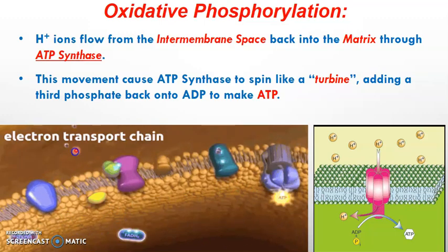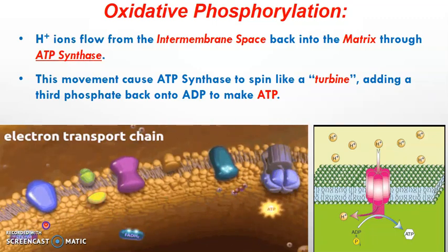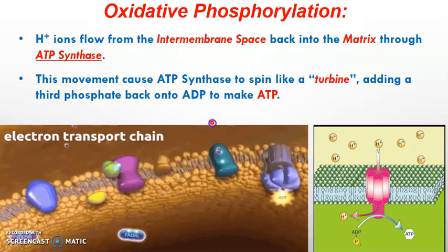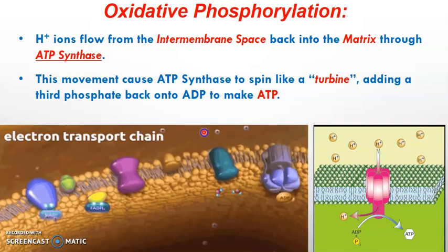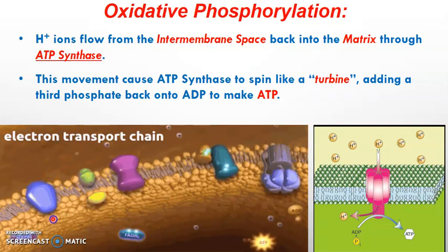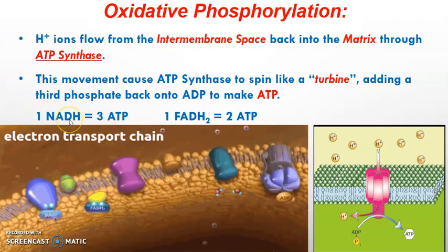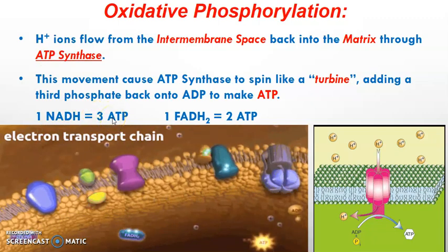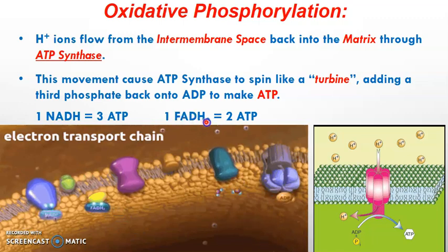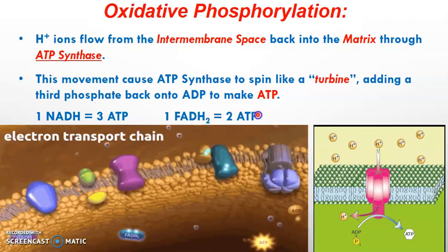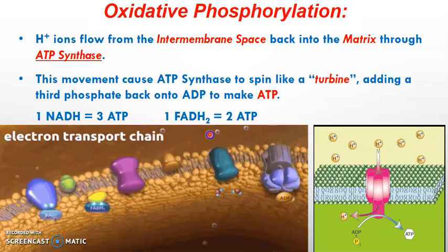Looking at the animation: NADH starts first, and its electrons have one, two, three opportunities to pull up hydrogen ions into the intermembrane space. FADH2 only has one, two opportunities — so it doesn't contribute as much to the gradient as NADH. As a result, one NADH can produce three ATP molecules because it had three opportunities to pull up hydrogen ions. But each FADH2 can only make two ATP, because it starts further down, skips a step, and only has two opportunities to pull hydrogen ions into the intermembrane space.